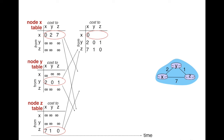All nodes share their tables with their neighbors. Node x receives tables from both y and z. When x receives y's distance vector — the values 2, 0, 1 — it populates that information from y into its table. Similarly, it receives z's distance vector — 7, 1, 0 — and uses that to populate its table. Once x has received this information, it calculates the cost to y and z using the Bellman-Ford equation.